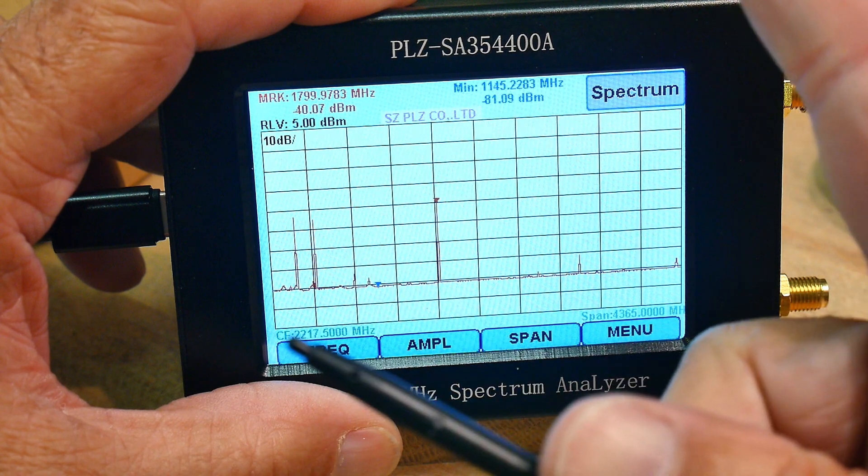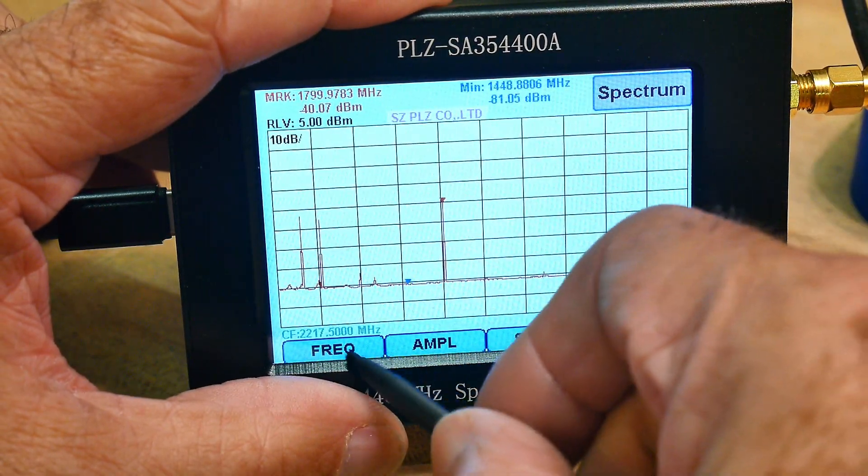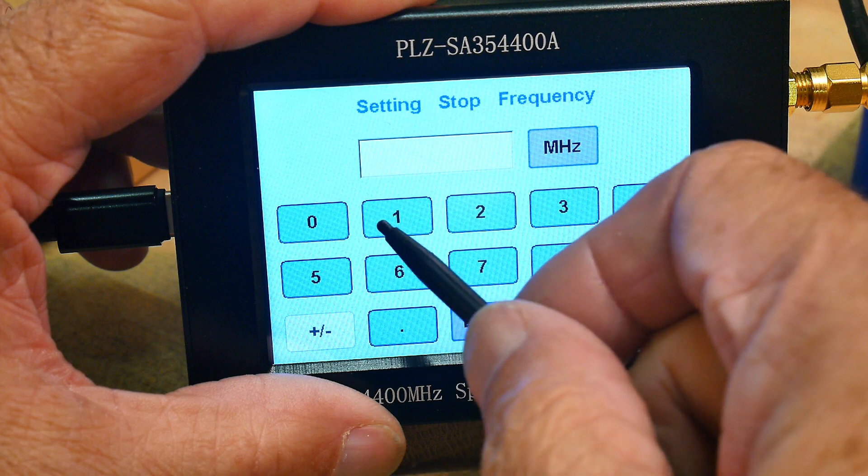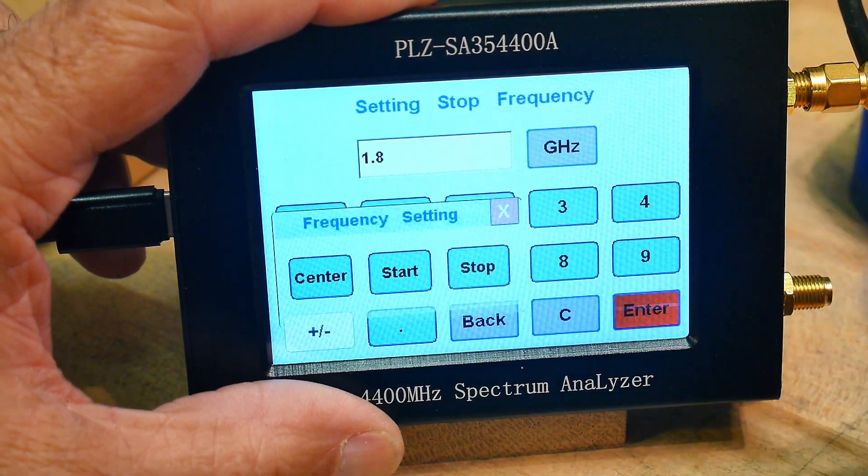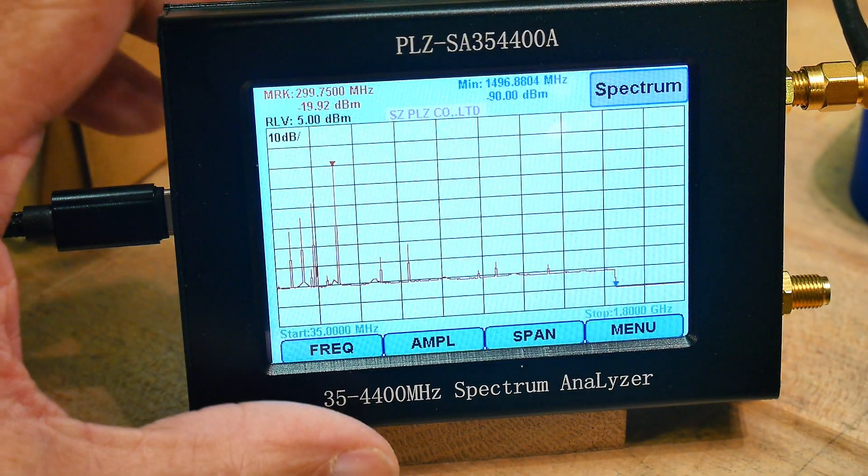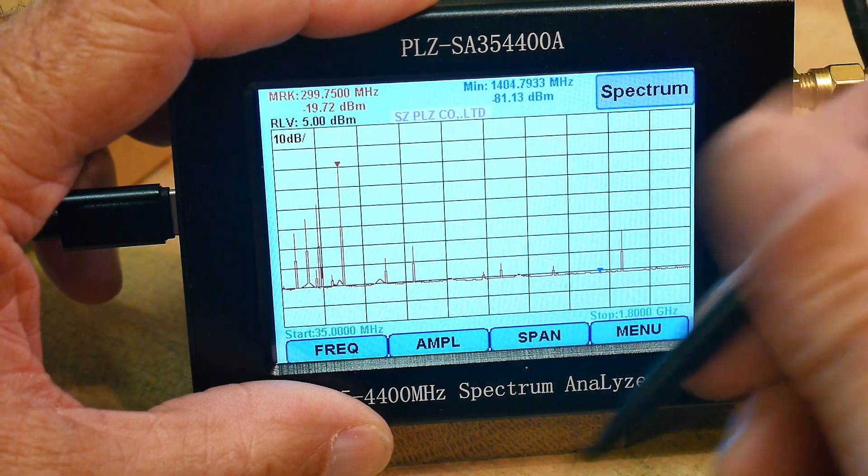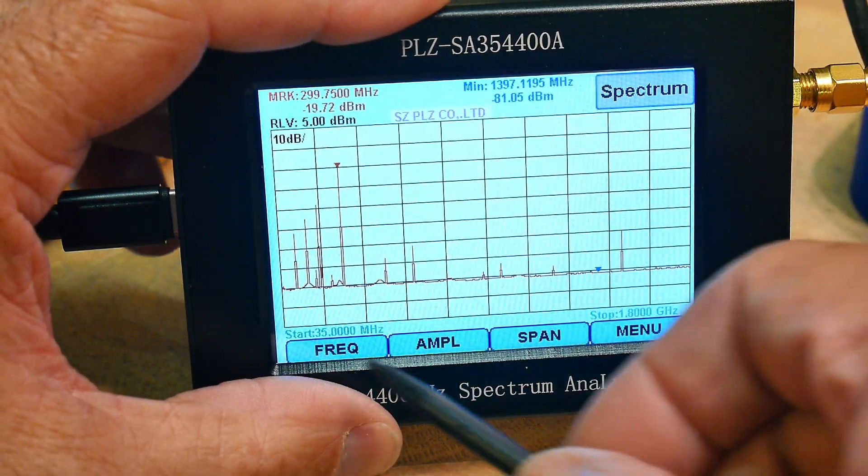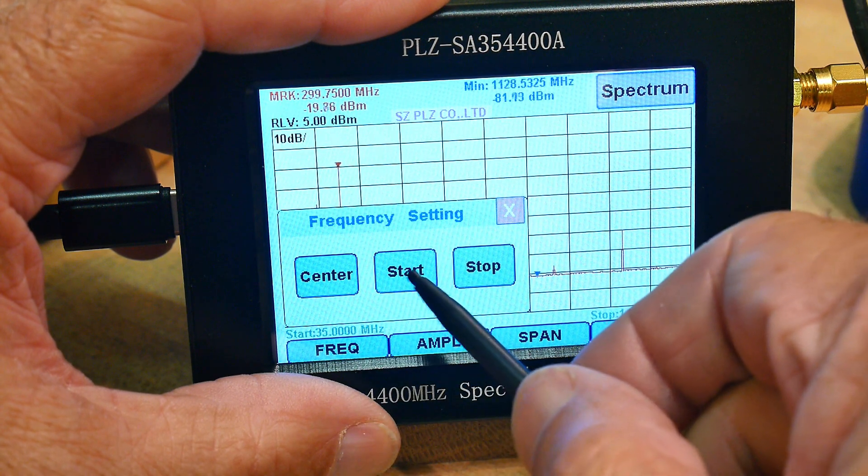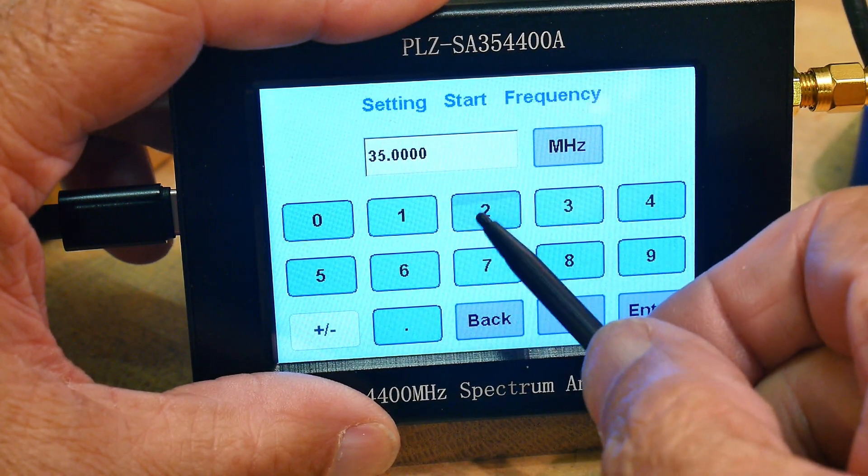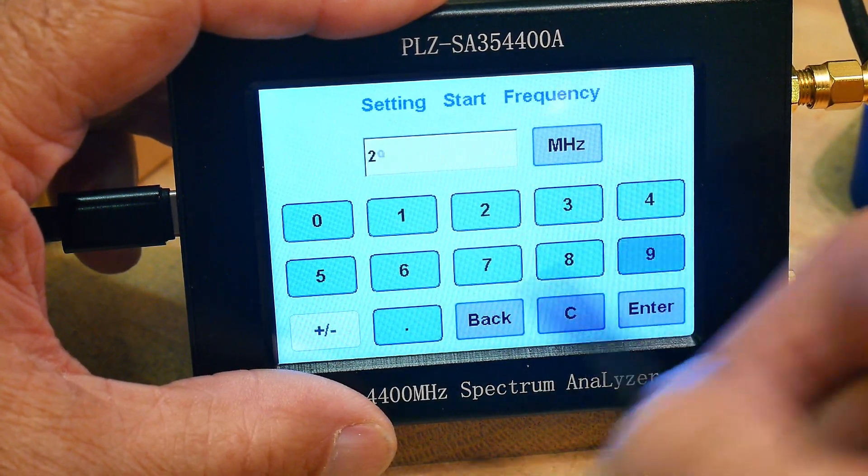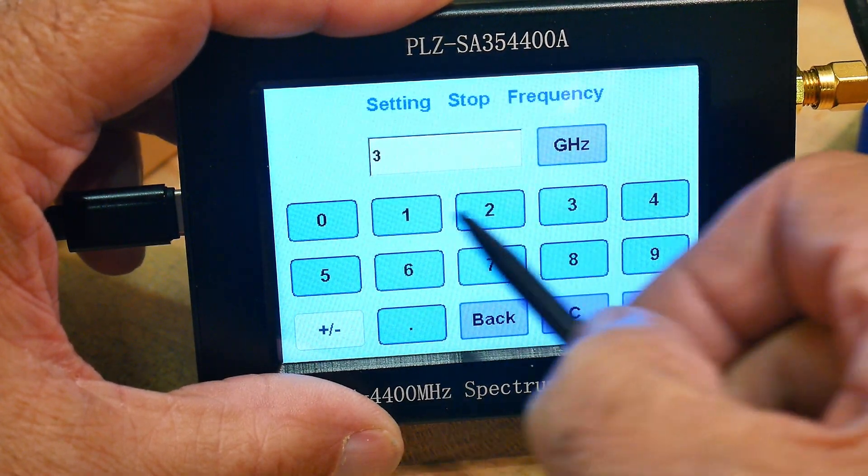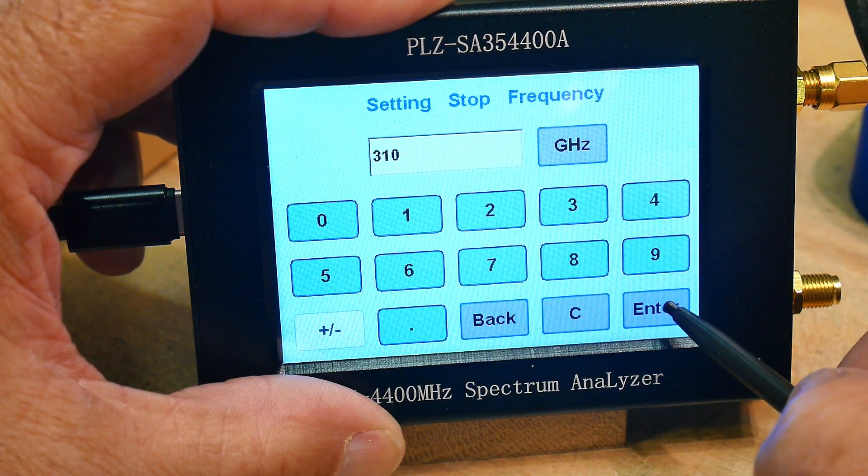Let's make it the exact same as the HP generator, which is a stop frequency of 1.8 gigahertz. You have to always have to clear it. 1.8 gigahertz. There we go. We can do a frequency start of 290, you have to hit clear first, 290, and we'll do a stop of 310 megahertz.